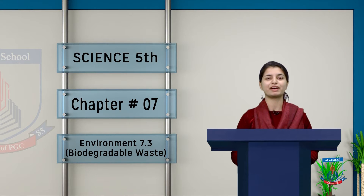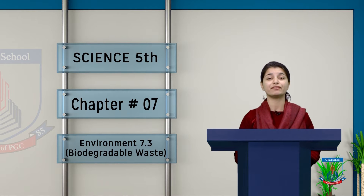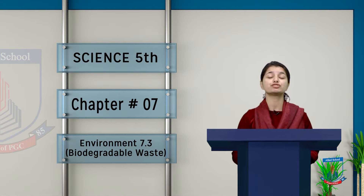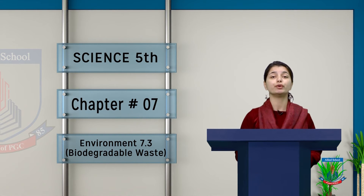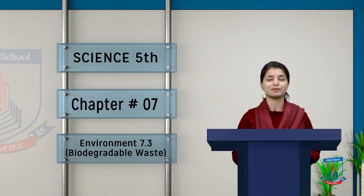Asalaamu Alaikum students of grade 5. I am Sabah, your science teacher, and we are talking about your book chapter number 7 about environment. In the environment chapter, so far we have covered the topics about pollution, and today we are going to step on to section 7.3 about biodegradable and non-biodegradable wastes. So let's go.